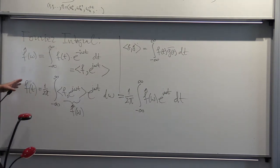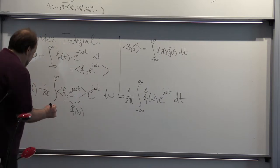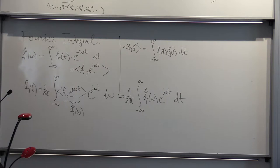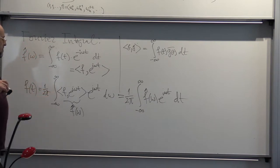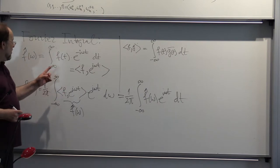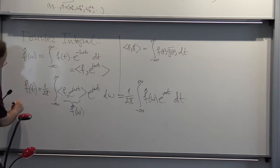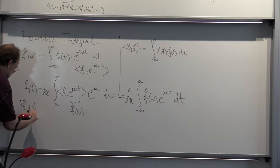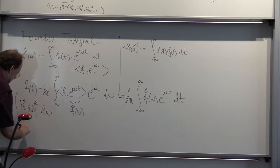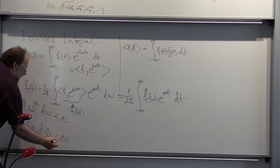This actually works regardless of what f is, as long as both functions are L2 integrable — that is, the integral of |f-hat of ω|² dω and the integral of |f of t|² dt are both finite. Of special interest in engineering are functions where f-hat of ω is non-zero only within a bounded range — telling you how much amplitude each harmonic has.